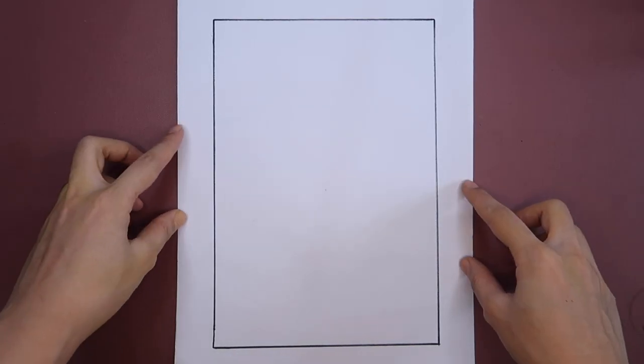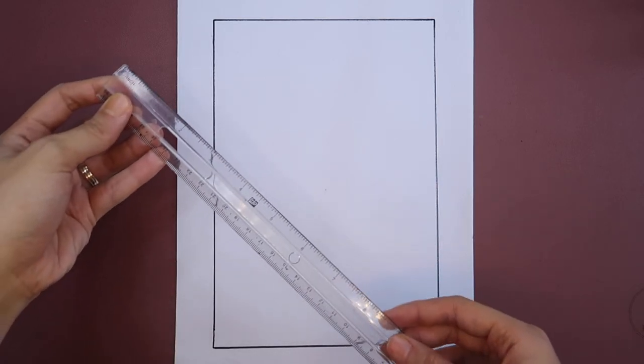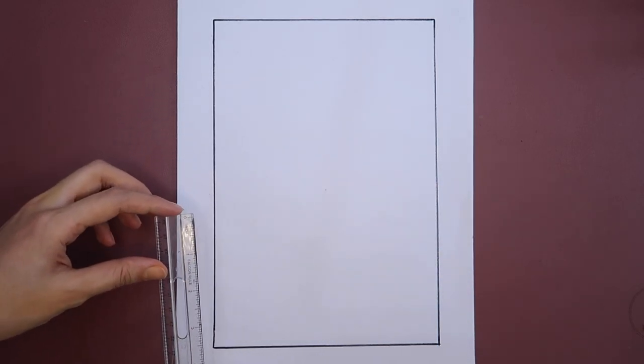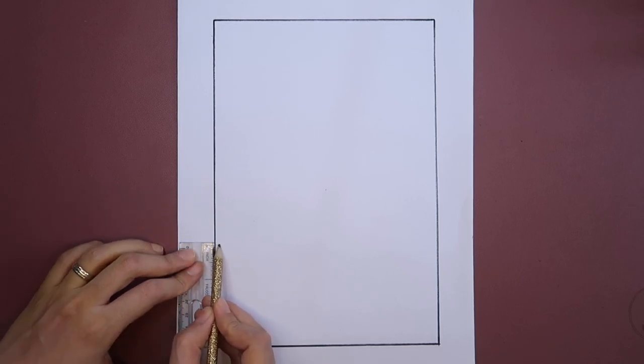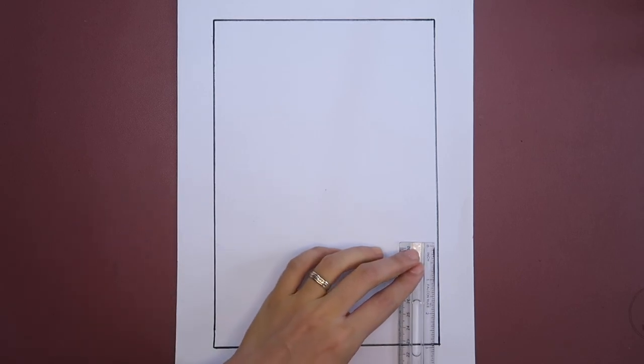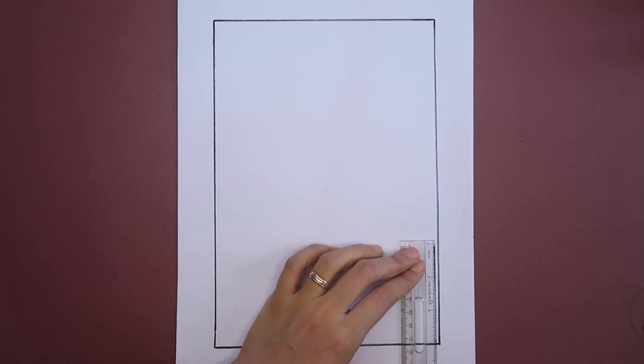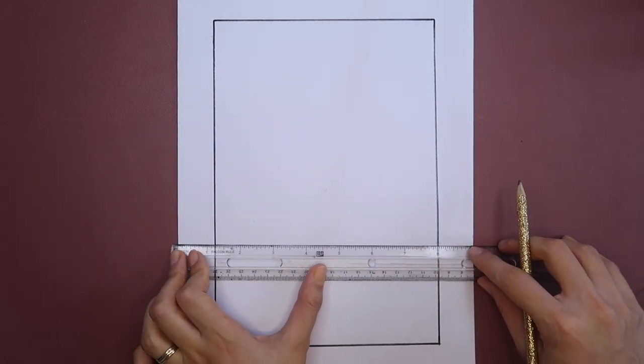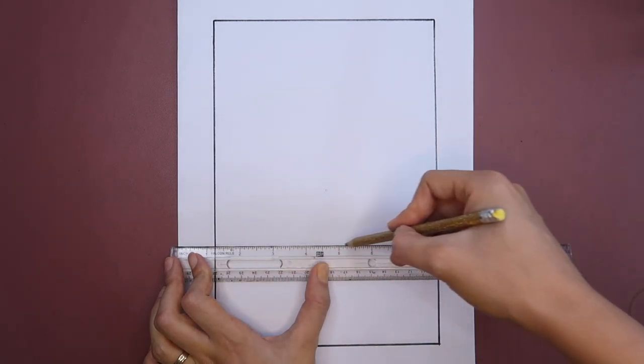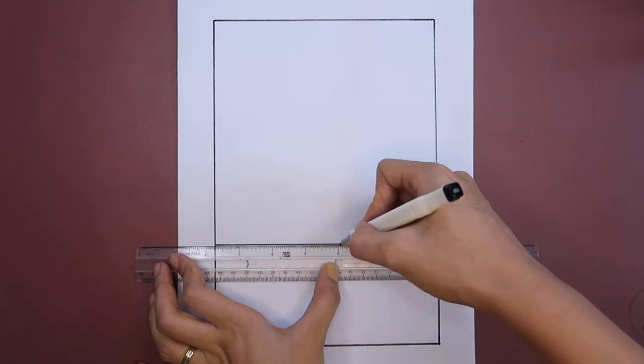Place your paper in a portrait position. Measure 3 inches from the bottom and mark it using your pencil. Do the same on the other side. Use your ruler to connect the dots and create a line. Trace it with a marker.